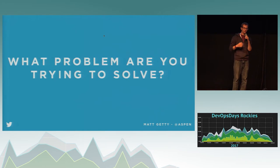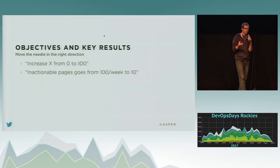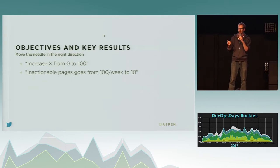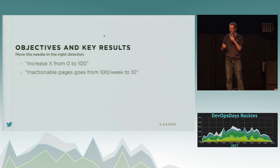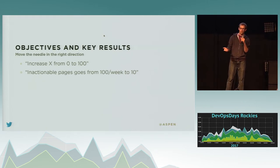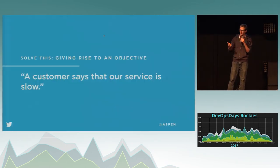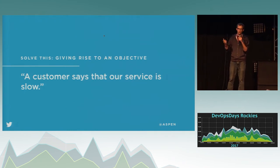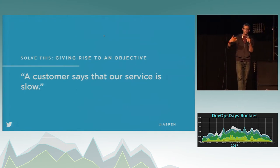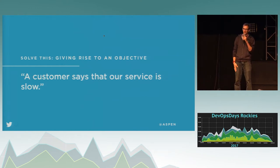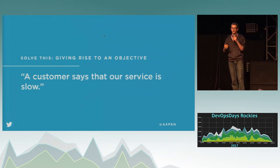I'm thinking of it from an OKR planning perspective. For those of you who aren't familiar with OKRs, basically the goal is to figure out a way to move the needle in the right direction. Instead of having things that are Boolean, like launch this, you have increase it from 0 to 100, so if you hit 75, you can say we got things going in the right direction. Before you have OKRs, you usually have a problem that you need an OKR to solve for. It usually winds up being something like a customer comes to you and says your service is slow.